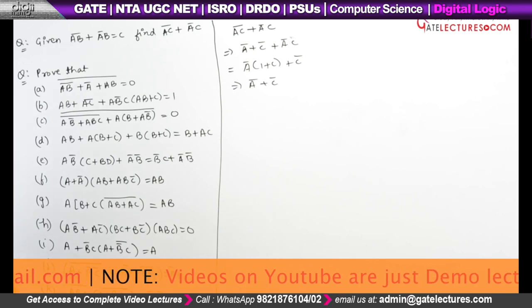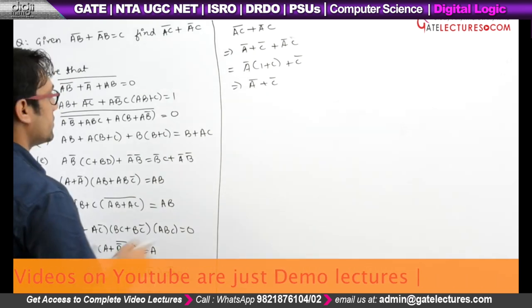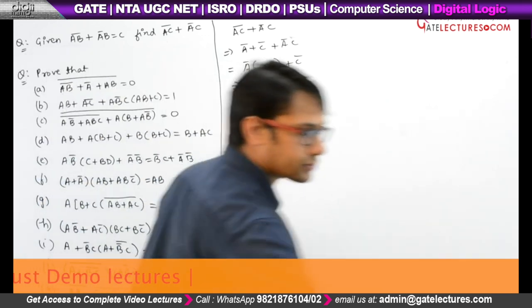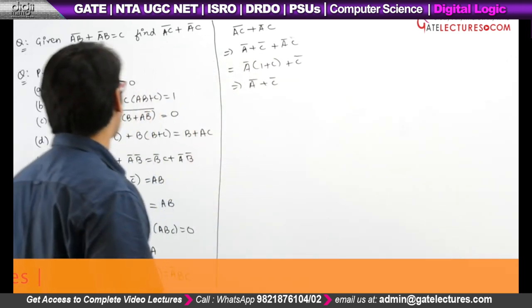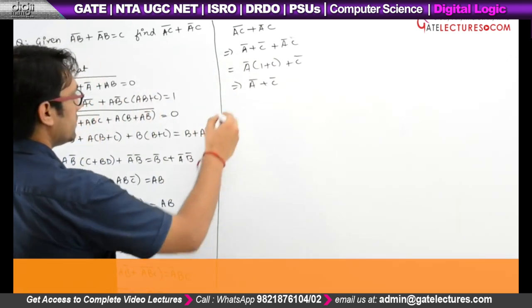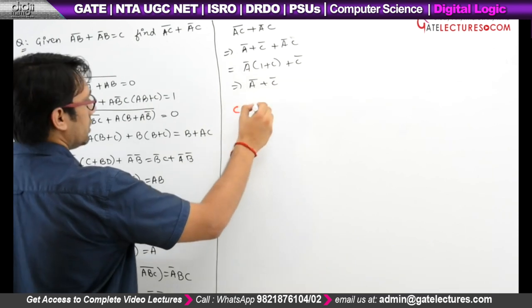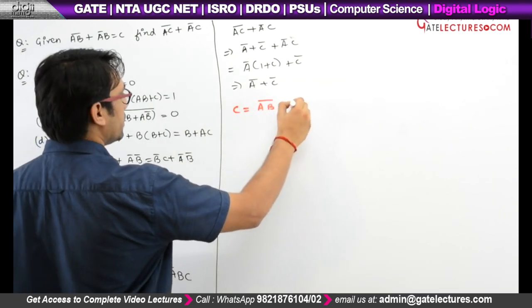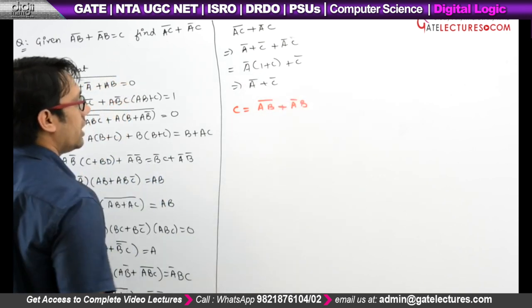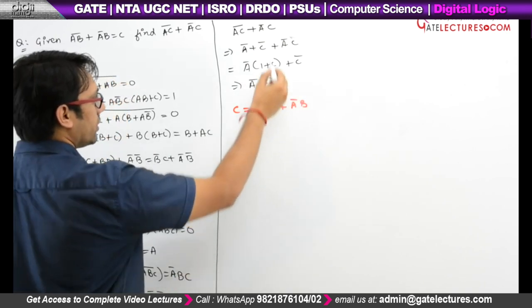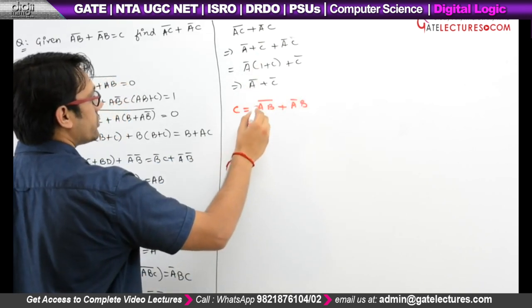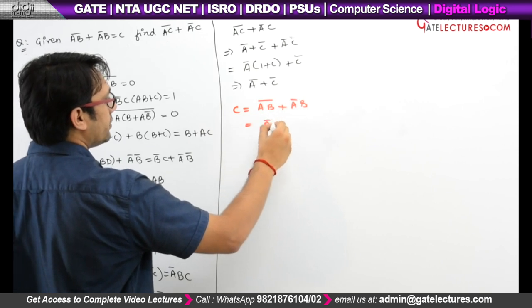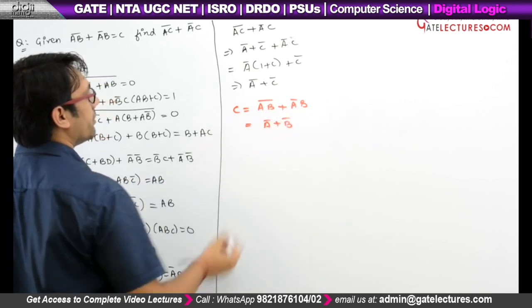We know what is the value of C. C can be written as (AB)' + A'B. Again you can do the same thing here also, so it can be written as A' + B'.